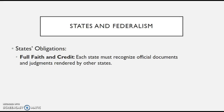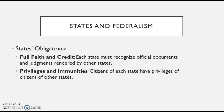It's important to know that states also have obligations to each other under federalism. The Full Faith and Credit Clause requires each state to recognize official documents and judgments rendered by other states — so if you get married in New Jersey, it has to be recognized in California. The Privileges and Immunities Clause means that citizens of each state have the privileges of citizens of other states, so a New Jersey resident going into Pennsylvania cannot be treated differently.